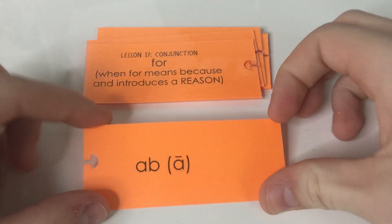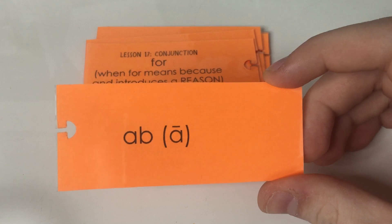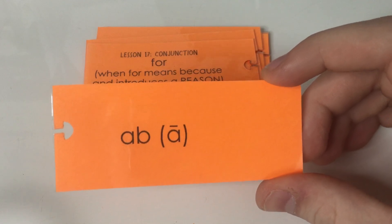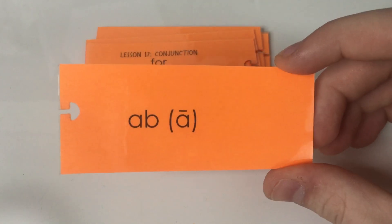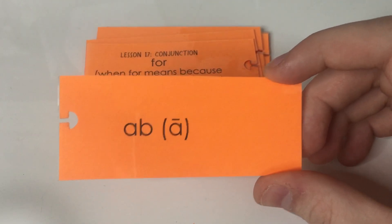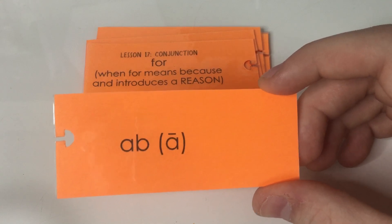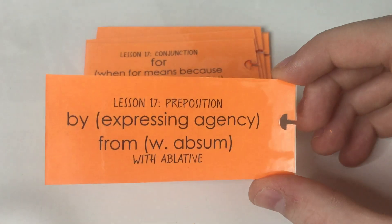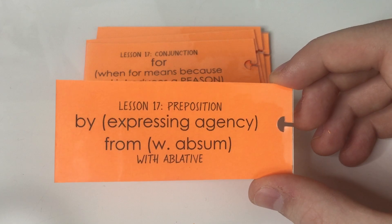And then we have ab or a. These are just two different ways to write the same word, so don't be confused by why there are two. Ab is used if the next word starts with a vowel, and a is used if the next word starts with a consonant — like a C or something. That way, if you were speaking Latin really fast, you wouldn't be confused on which one to use. This word means 'by' when expressing agency, and 'from' whenever it's with the ablative, because it's a preposition.